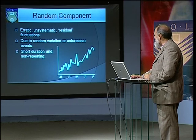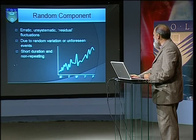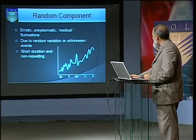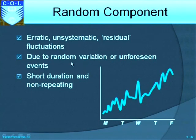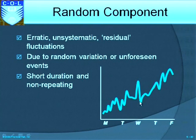In the random component, there are erratic, unsystematic, and residual fluctuations — you cannot predict what is happening. Up, down, sometimes much below, sometimes much higher. This is due to random variation or unforeseen events; you cannot explain why this randomness is happening. It is of short duration and generally non-repeating — there is no pattern as far as this component is concerned.